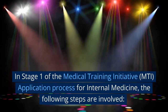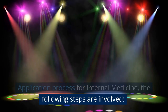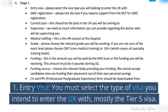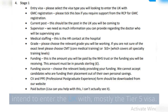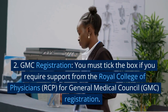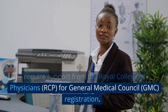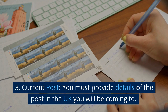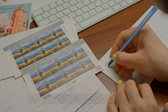In Stage 1 of the MTI application process for Internal Medicine, the following steps are involved. First, Entry Visa: you must select the type of visa you intend to enter the UK with, mostly the Tier 5 visa. Second, GMC Registration: you must tick the box if you require support from the Royal College of Physicians (RCP) for General Medical Council (GMC) registration. Third, Current Post: you must provide details of the post in the UK you will be coming to.